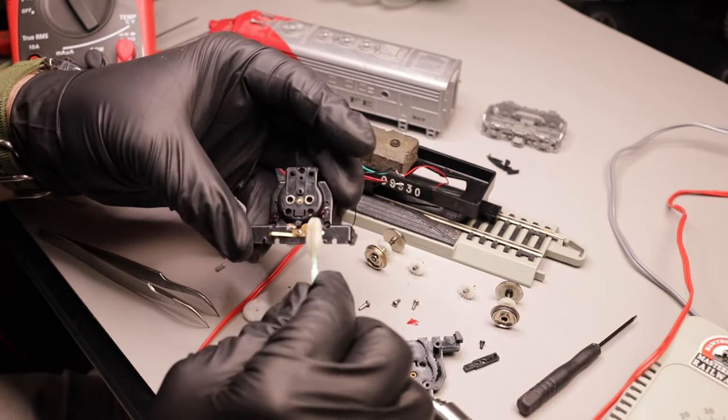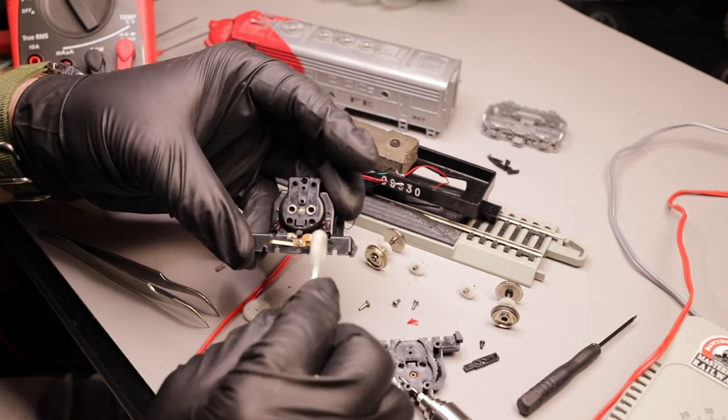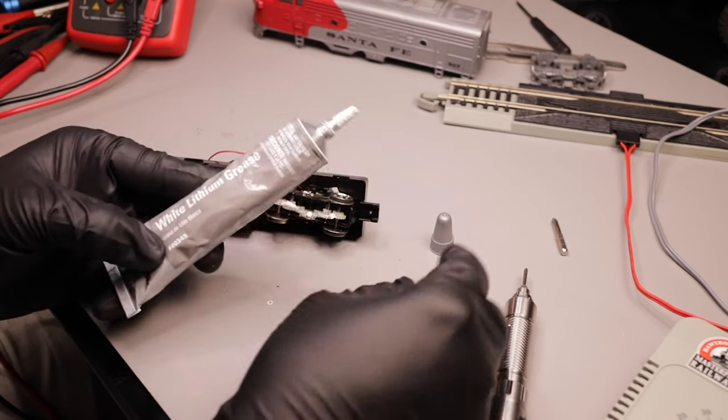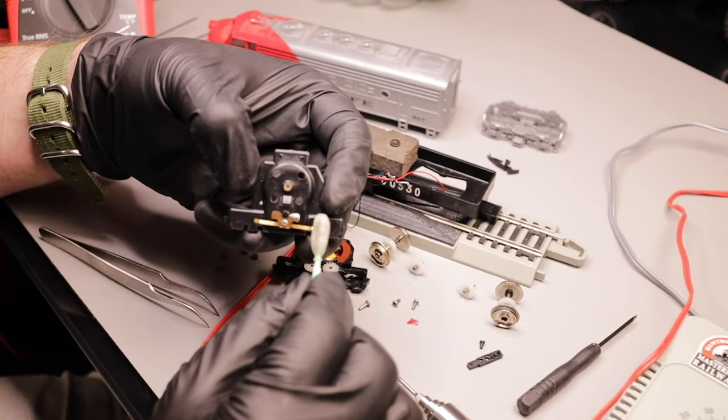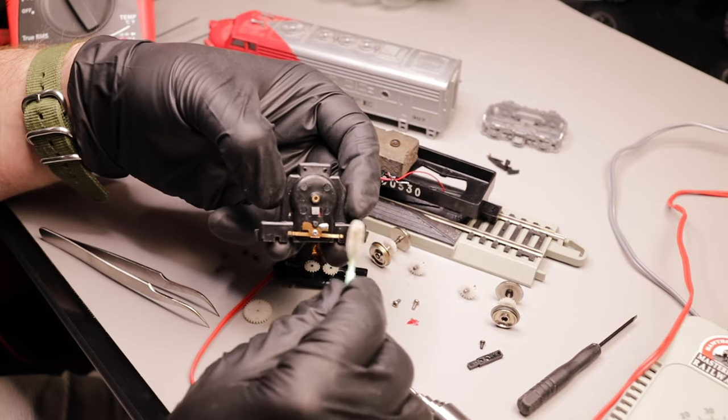This train was pretty old, so a lot of it was very dirty. I made sure to grease all the gears. Again, at this point, I re-soldered all the wires together. I didn't show the process of doing that, and it only took a couple minutes because there was only a few wires I had to re-solder.